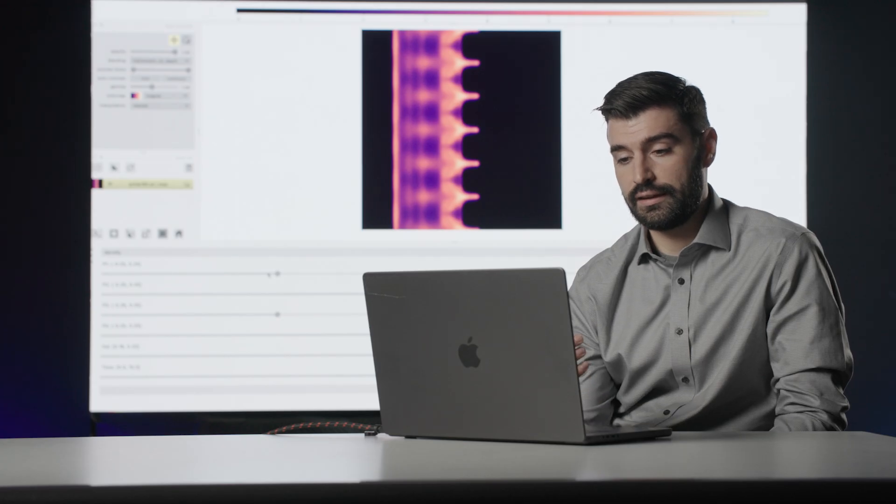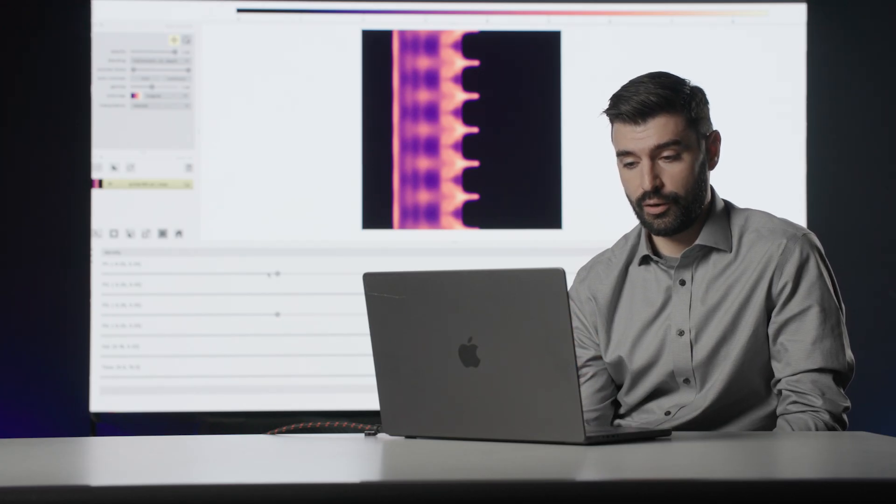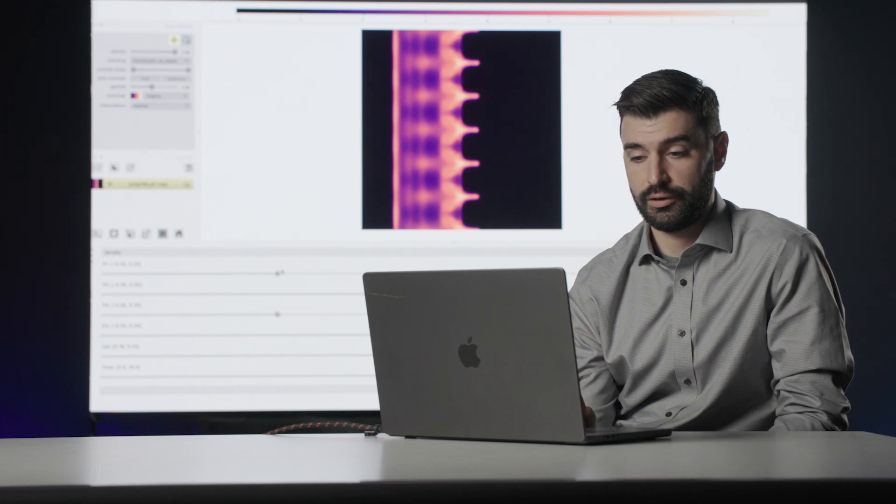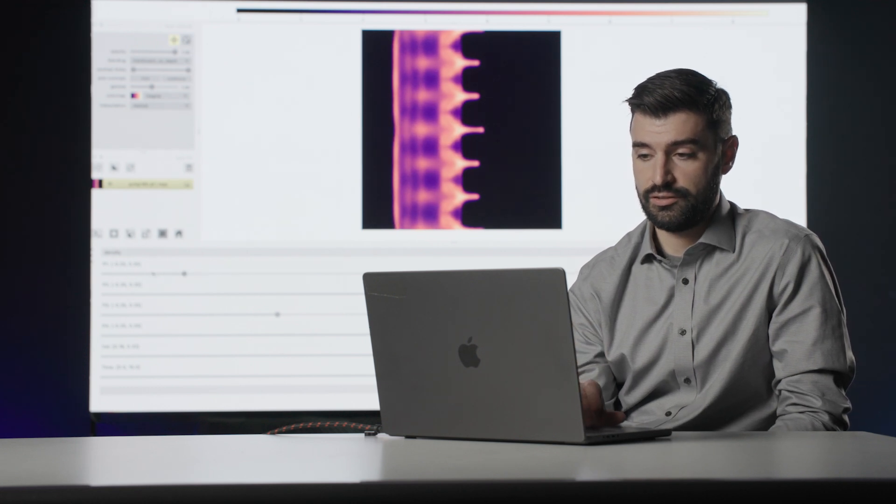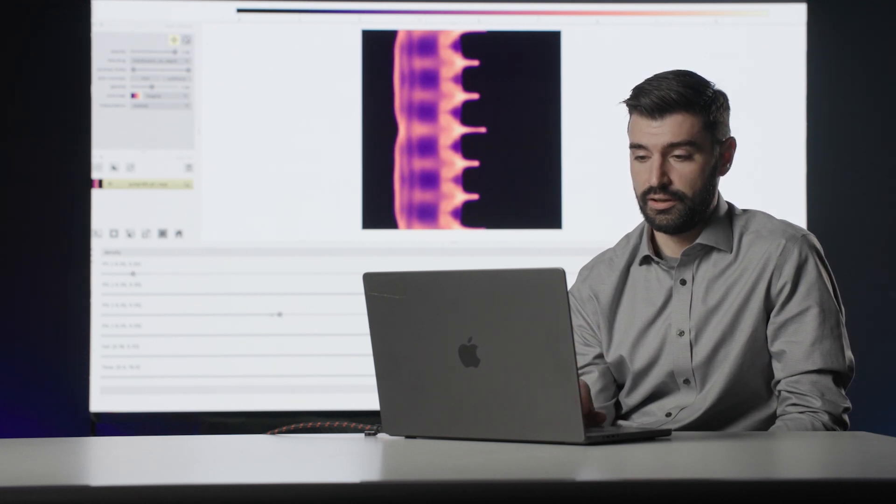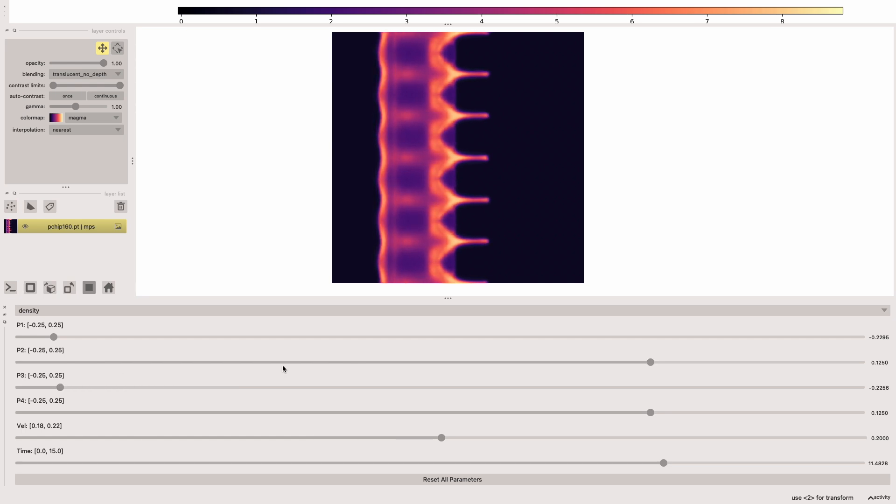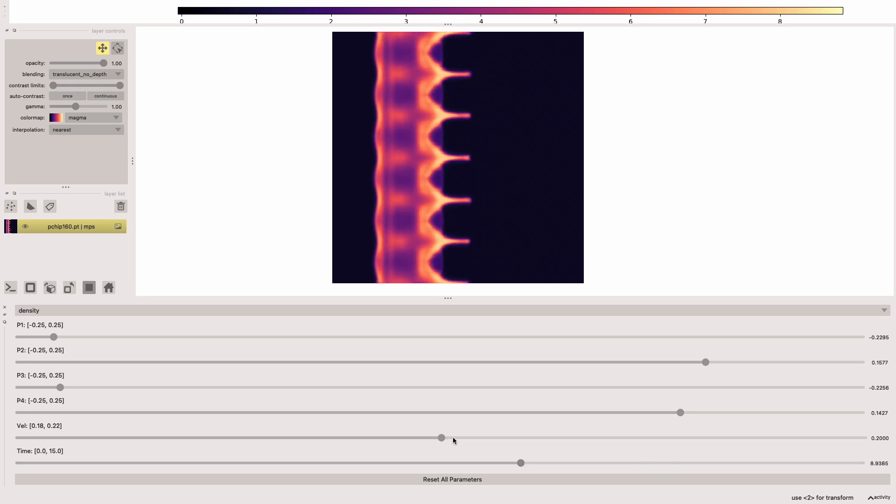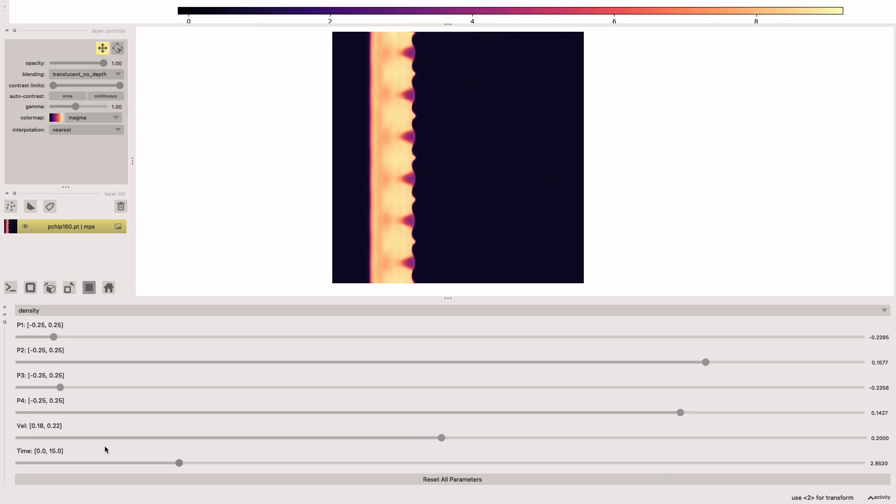This is actually a live ML demo where we're using a machine learning model in the loop to change what some of the initial parameters were of this copper on copper impact. So you can see as we change some of these parameter definitions, the instability lessens and changes shape. But we can actually even go back in time and see the initial result that resulted in that instability.